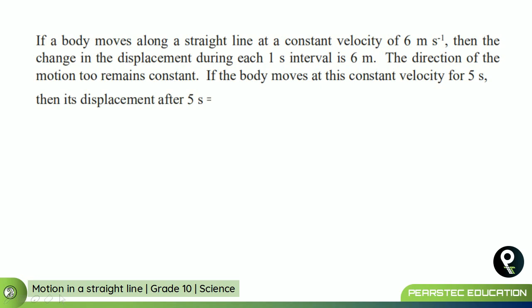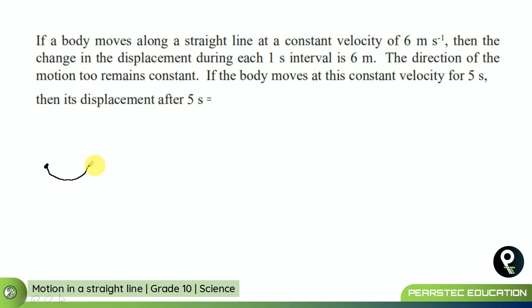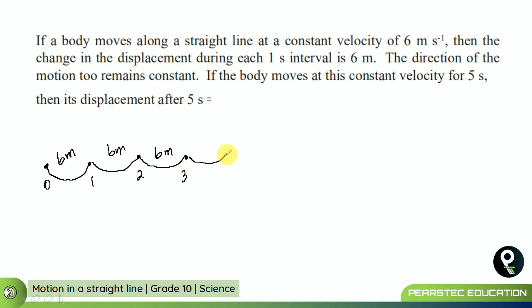Now, here's a beautiful example we are going to check. If a body moves along a straight line at a constant velocity of 6 meters per second, then the change in displacement during each 1-second interval is 6 meters. So in the first second it is moving about 6 meters, then another 6 meters in the next second, another 6 meters in the third second, another 6 meters in the fourth second, and another 6 meters in the fifth second. The direction of motion also remains constant.